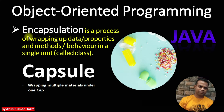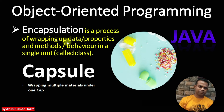The next concept is called encapsulation. In the real world, this is nothing but a capsule, which basically wraps multiple materials into one cap — that's why it's called a capsule. Similarly, this concept is used in object oriented programming. Encapsulation is a process of wrapping up data or properties and methods or behavior into a single unit called a class. The real world example of encapsulation is a capsule.